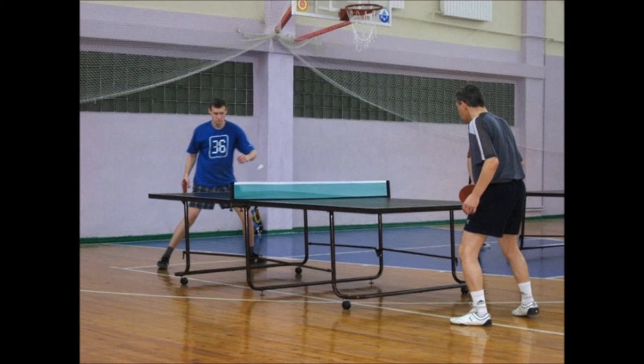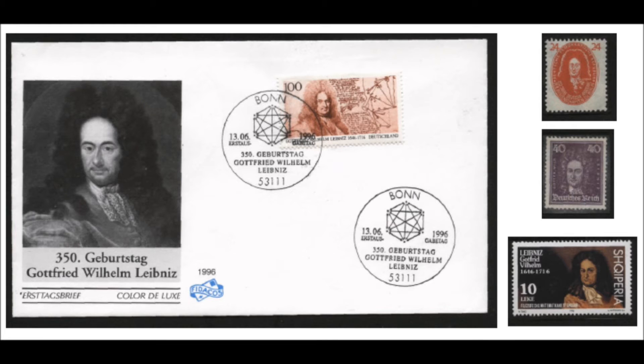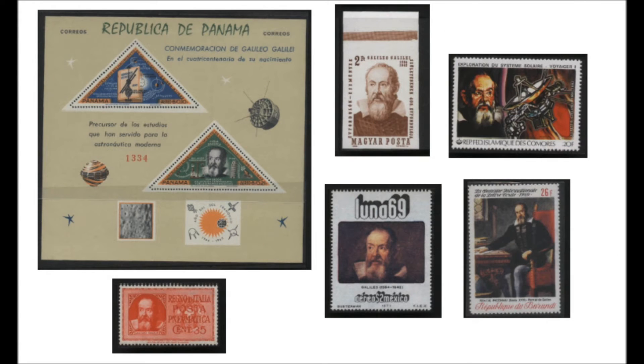Head of the department, Doctor of Science in Physics and Mathematics, Professor Aleksandr Vatuljan is actually involved in sports. For example, he was in the institute team which last year won the first prize in the tennis competition among the university academic staff. In addition, Aleksandr Vatuljan collects postage stamps which depict great mathematicians and mechanics. Here are some samples from his collection.